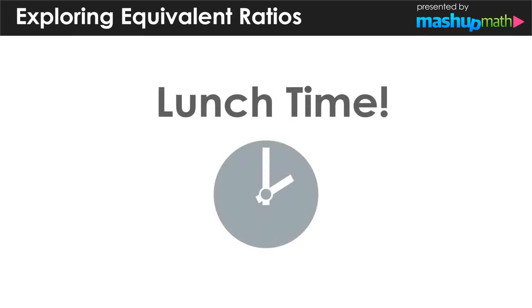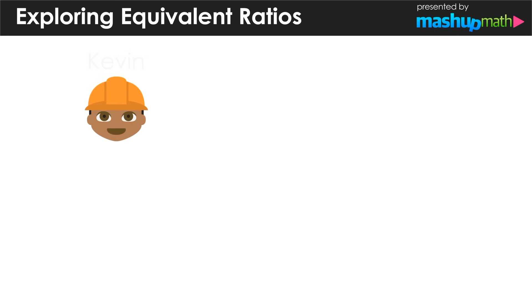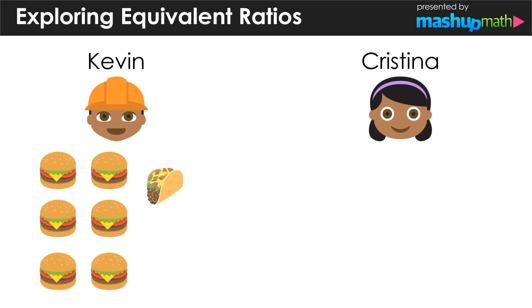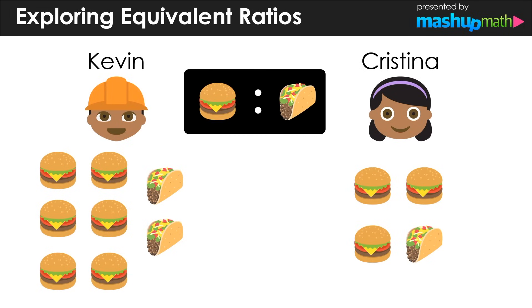In this lunchtime scenario, we have Kevin and Christina who are both ordering lunch to bring back to their coworkers. Kevin orders six hamburgers and two tacos, while Christina orders three hamburgers and one taco. We want to explore the ratio of hamburgers to tacos in this situation.